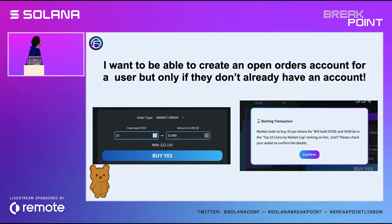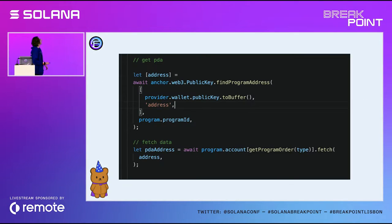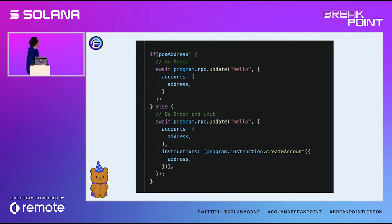Another thing in Foresight was we didn't want to have a 'create an account' button, which you'll see on a lot of different programs. There's always this hidden approval step where they try to hide that you have to create an account before you can actually use the product. We didn't think that would be ideal UX, so we only have one 'buy yes' button. We solve this by first checking for the PDA of the account and fetching that data. If it exists, we either do an update, or we run the instruction with Anchor to create the account and do the update at the same time.